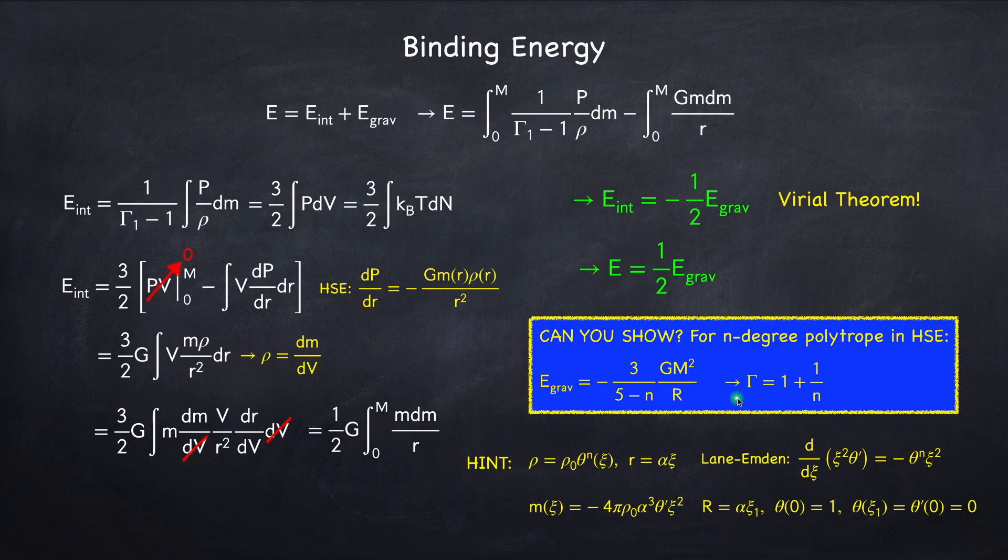Now here, this gamma is just some general gamma. It doesn't have to be the gamma associated to n equals 3. It could be gamma 1. It could be anything. This is just a mathematical result.